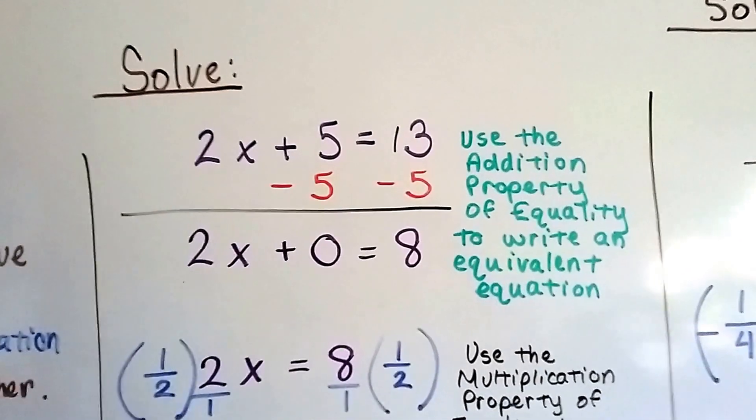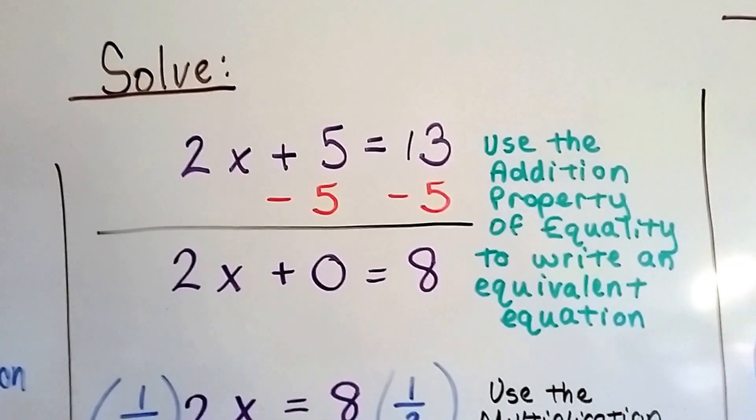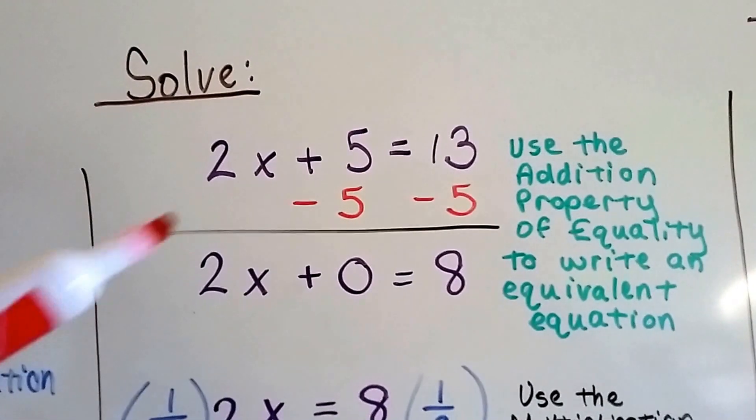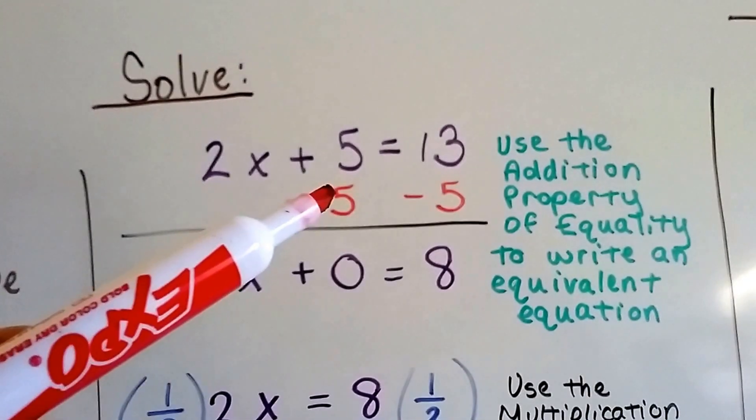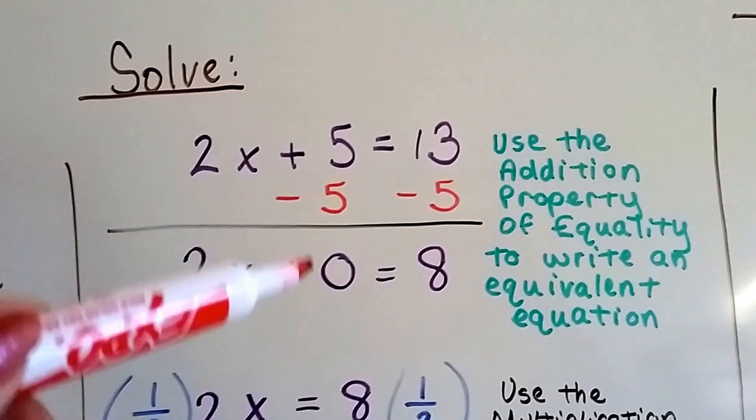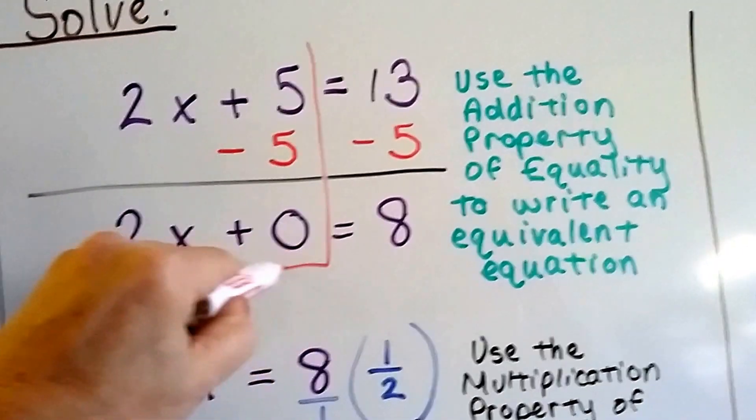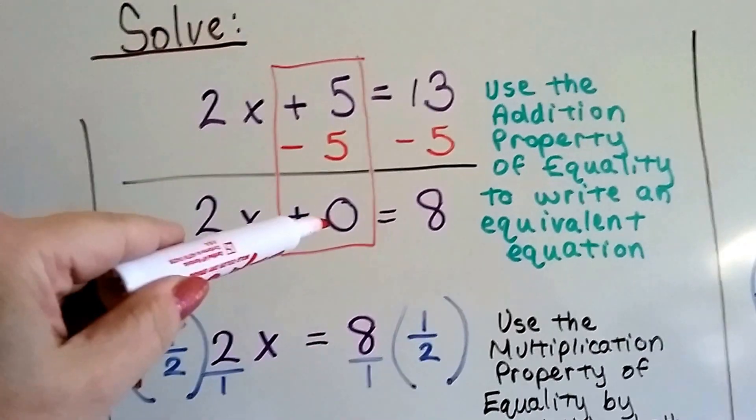If we need to solve 2x plus 5 equals 13, we can use the addition property of equality first to write an equivalent equation. Because it says plus 5, we're going to do minus 5 on both sides of the equation. That's going to make this portion of it equal 0.